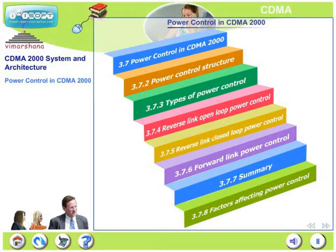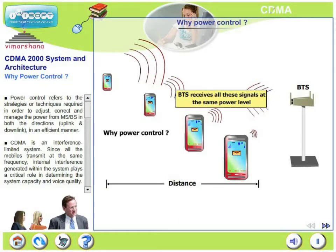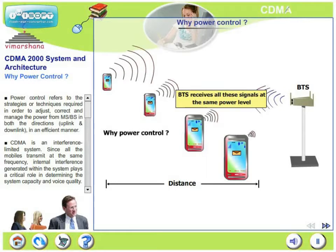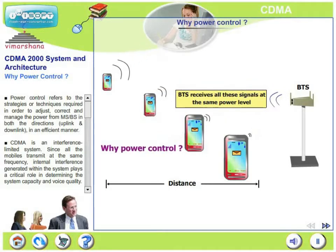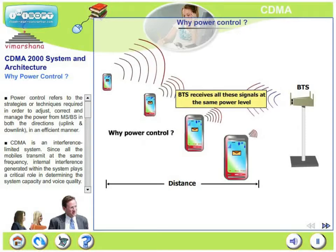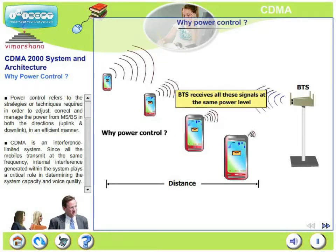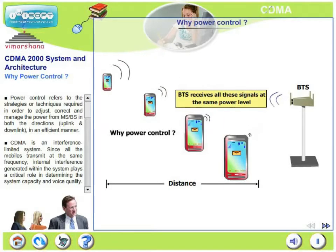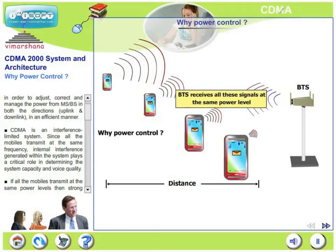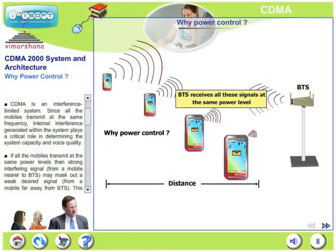Let's move on to power control in CDMA 2000 in detail. A typical CDMA power control: why power control? Power control refers to the strategies or techniques required to adjust, correct, and manage the power from the mobile station to the base station in both directions — both uplink and downlink — in a very efficient manner.